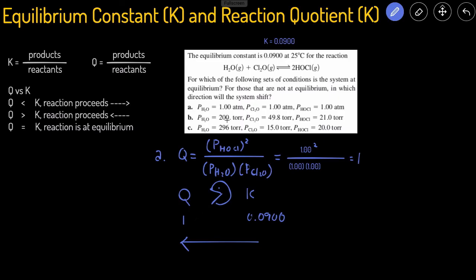So for B, it's the same approach, but we're just going to switch some of the numbers out. So let's recalculate the Q for B. The pressure of the HOCl, the product, is 21, and then we have to square that. The pressure of the H2O is 200,